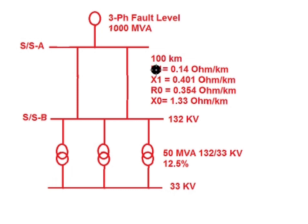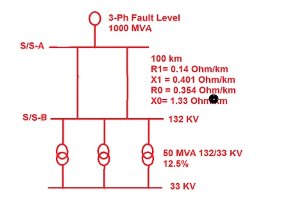The line parameters for the panther conductor are known: positive sequence resistance R1 is 0.14 ohm per kilometer and positive sequence reactance X1 is 0.401 ohm per kilometer. The zero sequence resistance is 0.354 ohm per kilometer and zero sequence reactance is 1.33 ohm per kilometer. Each transformer has a percentage impedance of 12.5 percent.